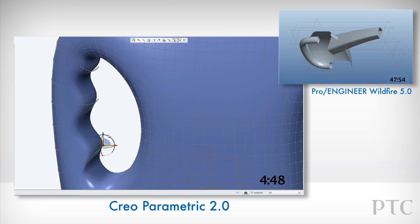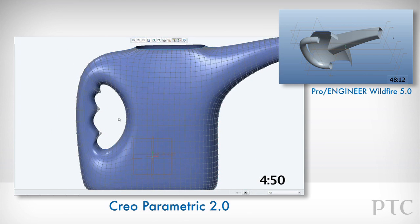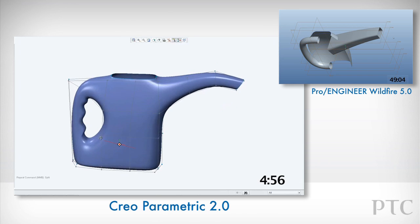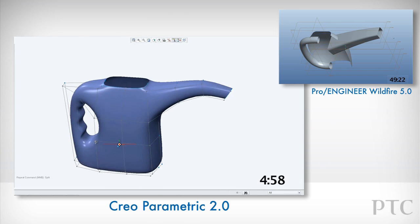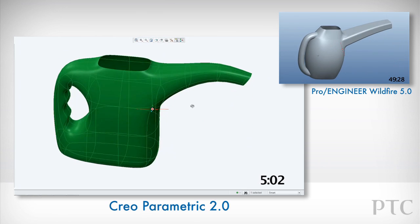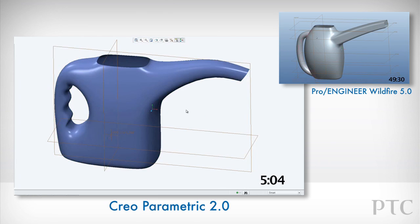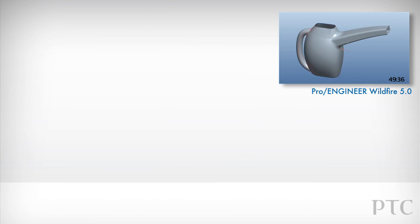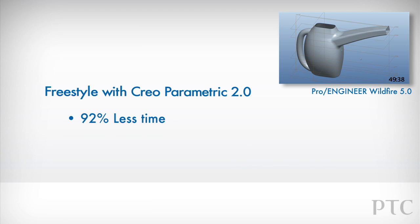Creating and changing this geometry in Pro Engineer Wildfire is very time consuming, and editing the shapes is difficult. During concept design, when we're trying to quickly and easily iterate designs to explore alternatives, only Creo Parametric with Freestyle is the real choice. We've shown some of the key highlights in the new Freestyle command in Creo Parametric. The impact on design productivity is impressive. In this short comparison, I saved 92% of the time taken to achieve a similar result with Creo Parametric compared to Pro Engineer Wildfire.